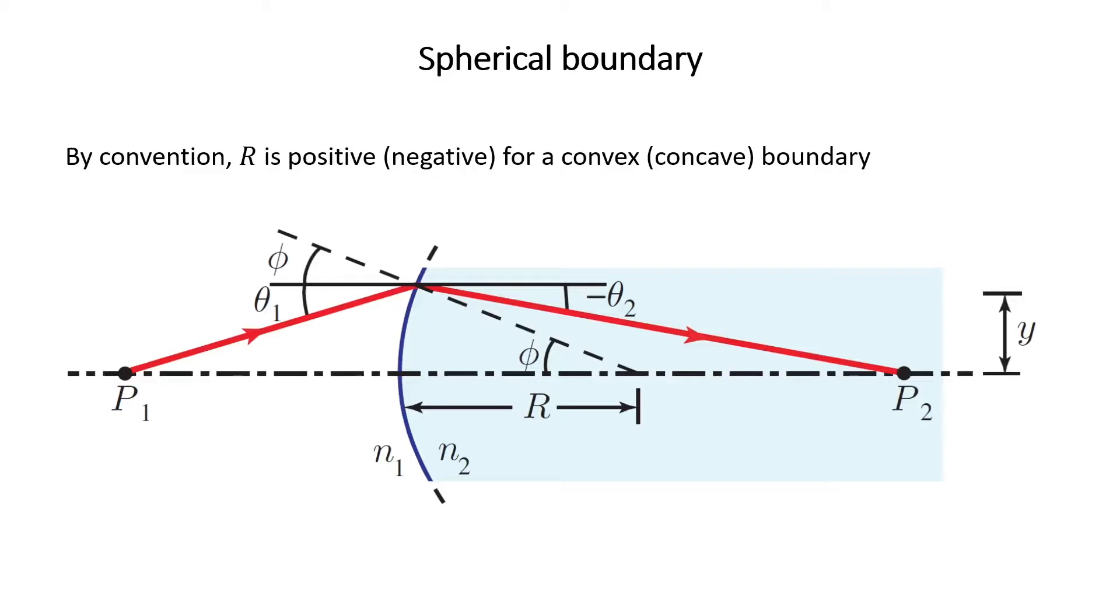Here, the normal to the boundary is shown by a dashed line. Theta 1 is the angle of the incident ray with respect to the optical axis. So this is the optical axis, this angle is theta 1, and also this angle is theta 1.